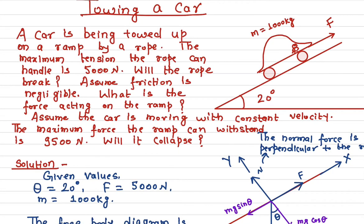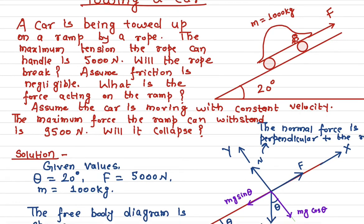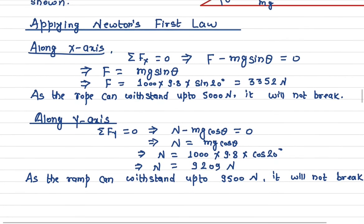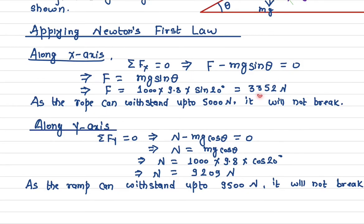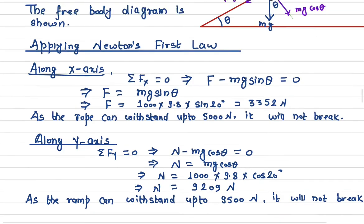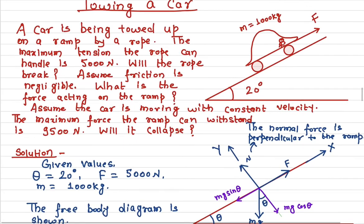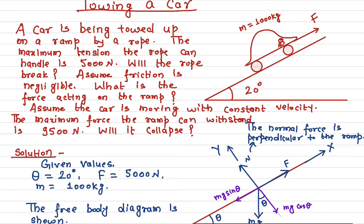So the rope, as it mentioned here, can handle 5000 Newton force. And while pulling up the car, we are applying only 3352 Newton. So that means the rope will not break, it will survive. So this rope will not break for sure now.